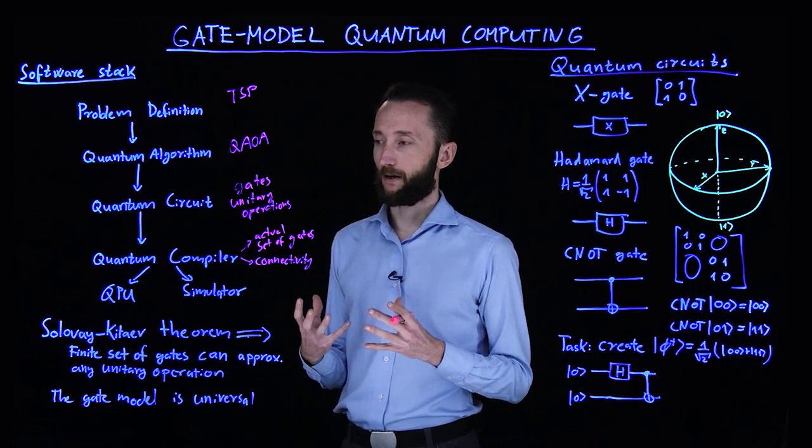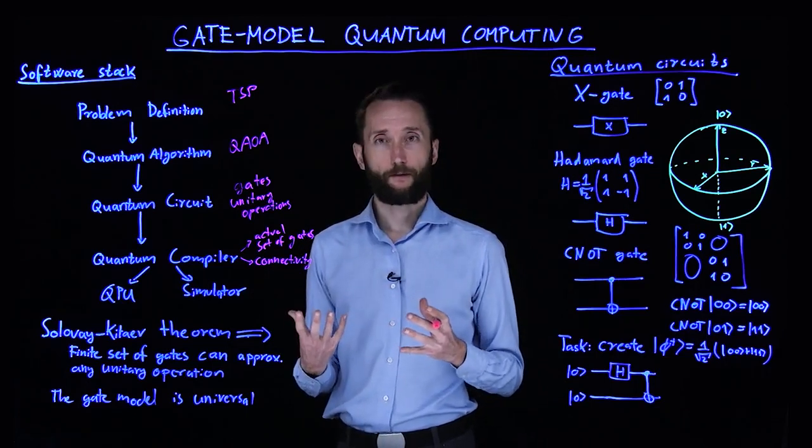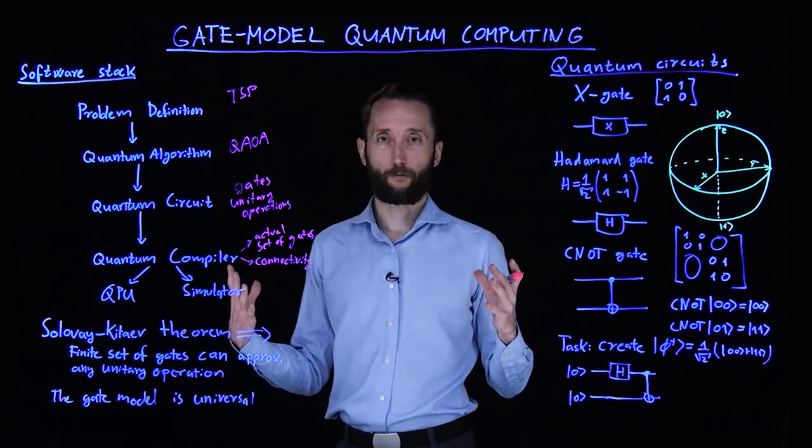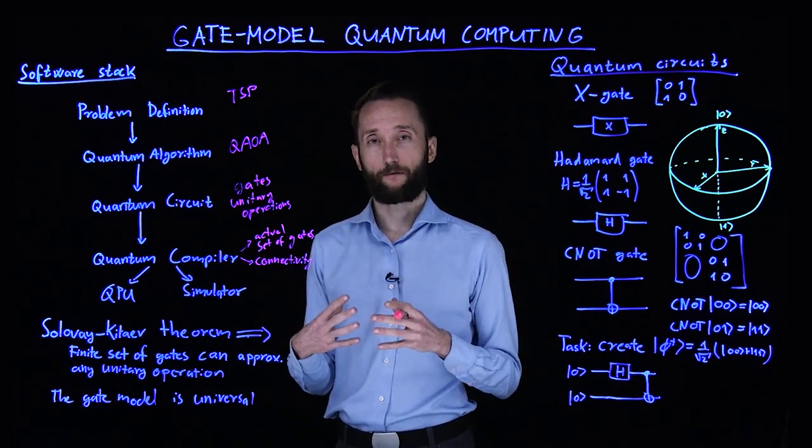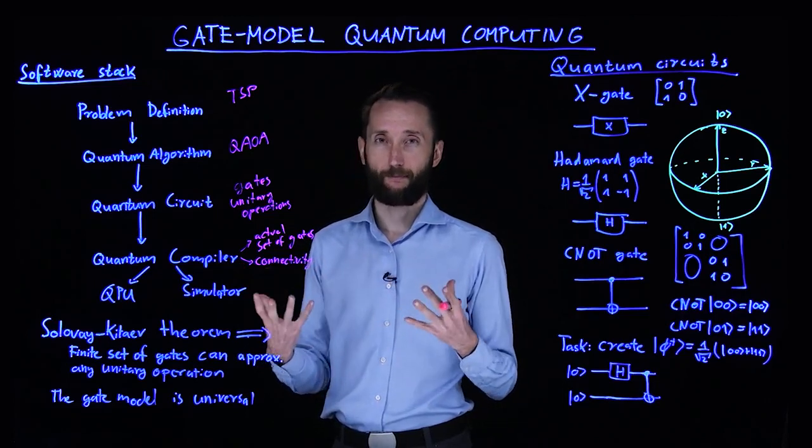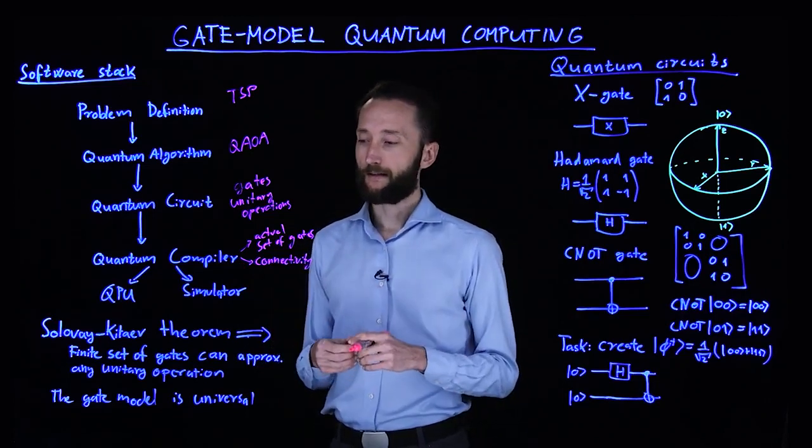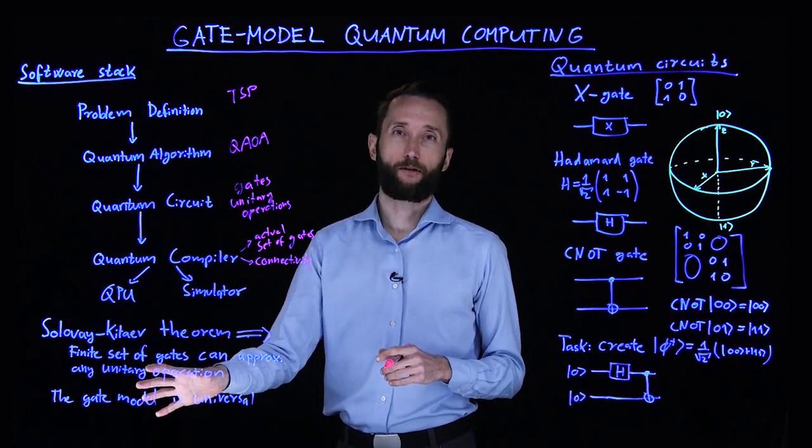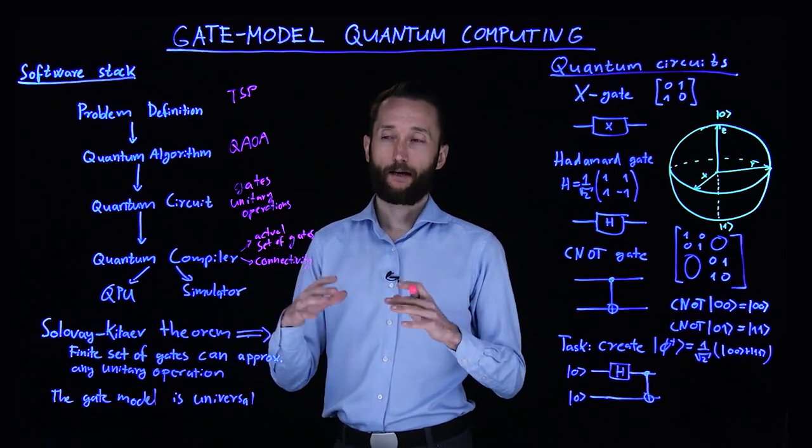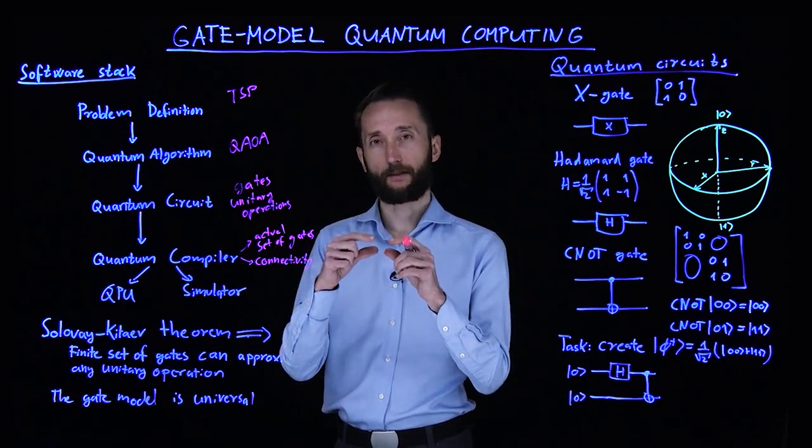So there is this fantastic theorem called the Solovey-Kitaev theorem, which says that you can approximate any unitary operation by a finite set of gates, and this approximation is efficient, you don't need that many gates. And this is what makes the gate model of quantum computer universal, because you can take any unitary and you can decompose it into elementary gates.